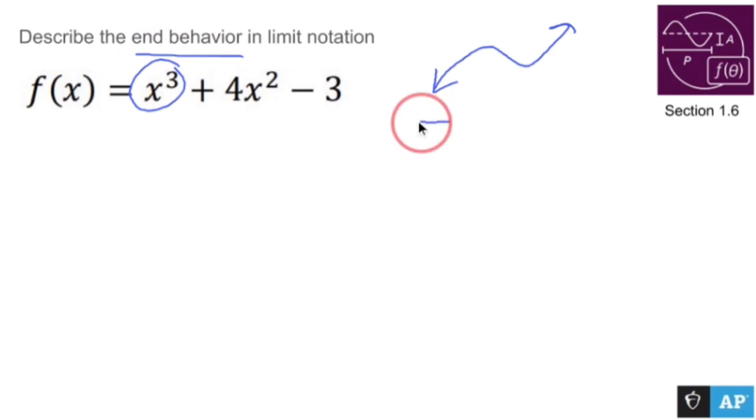On the left side, as I move to the left, I go down, and as I move to the right, I go up. So how do I write that out?